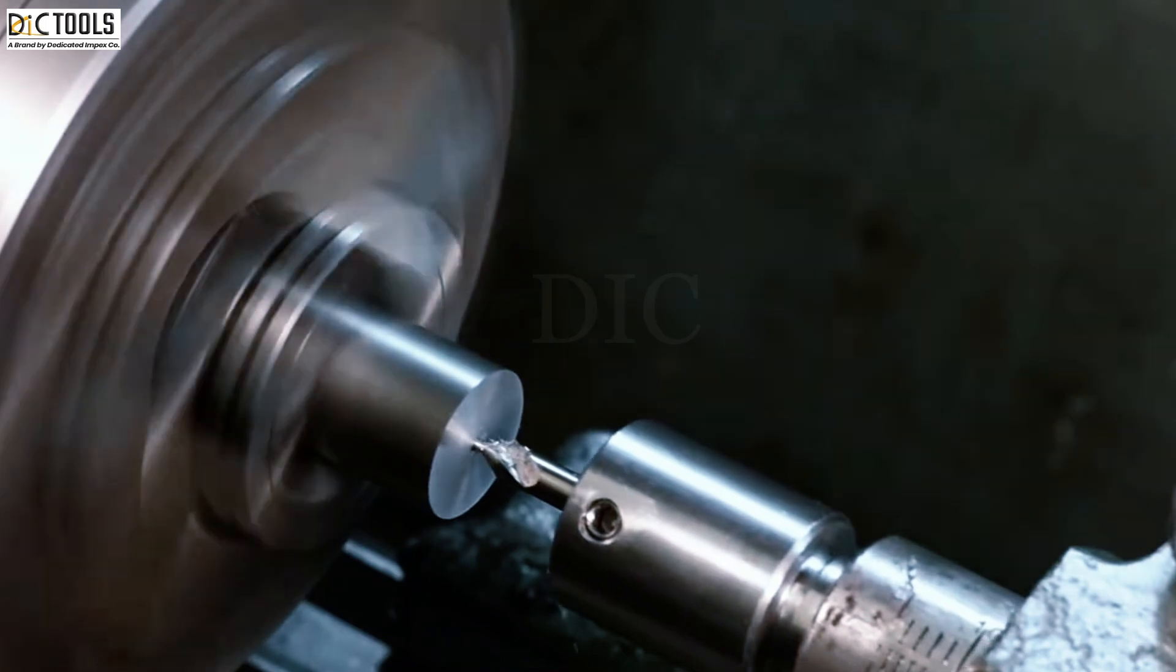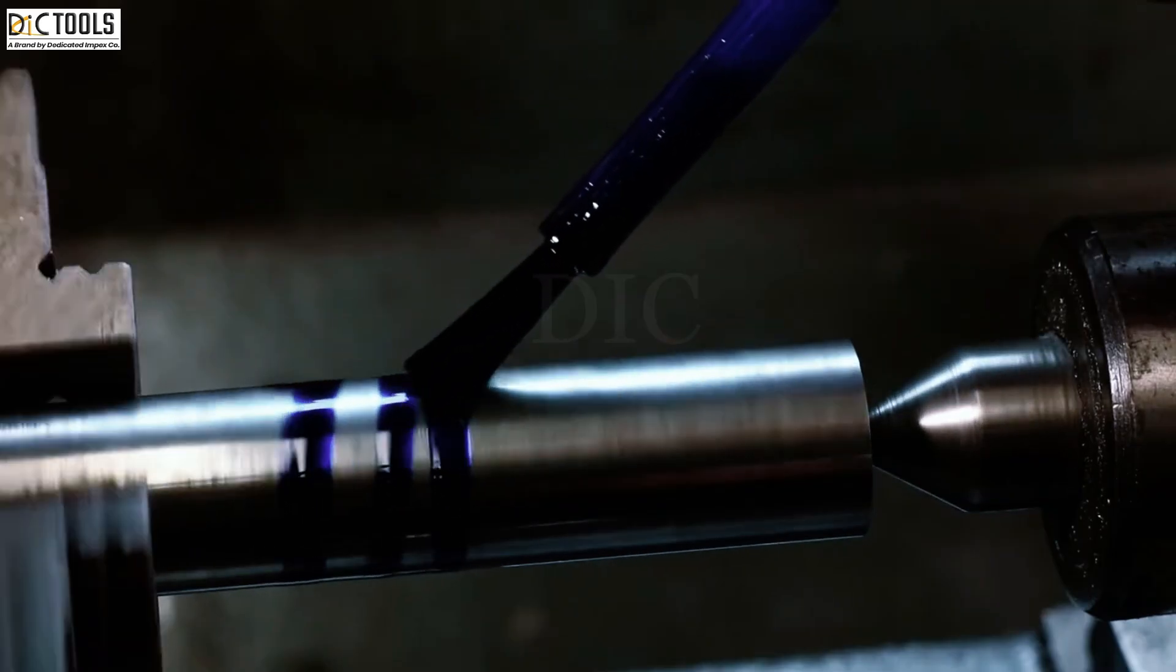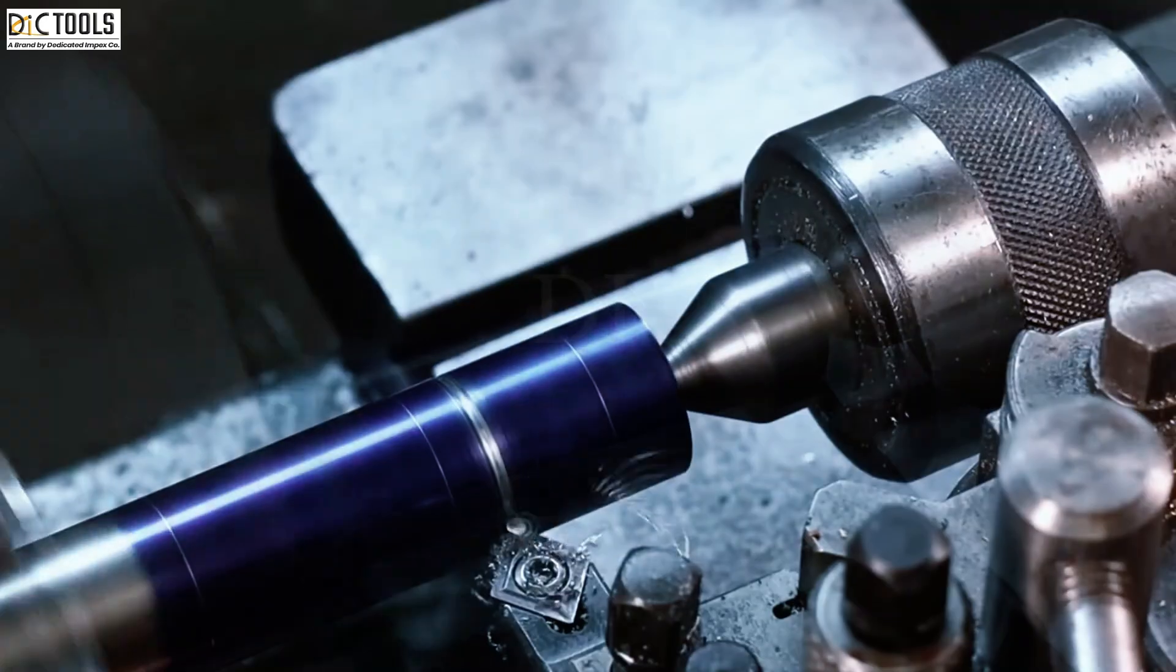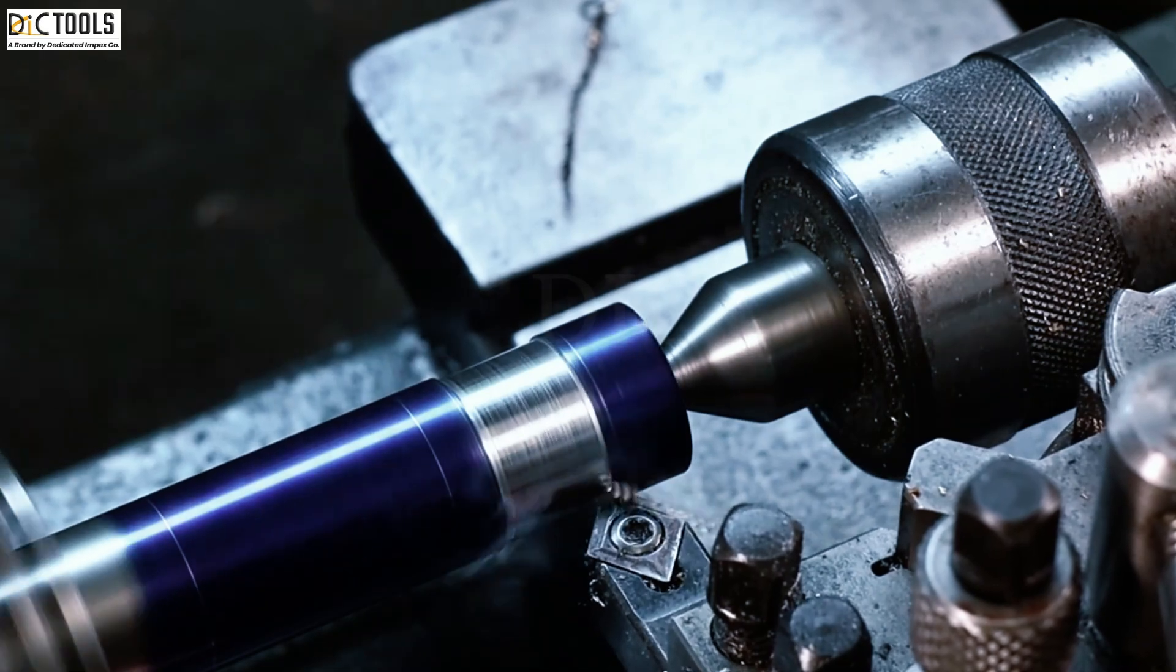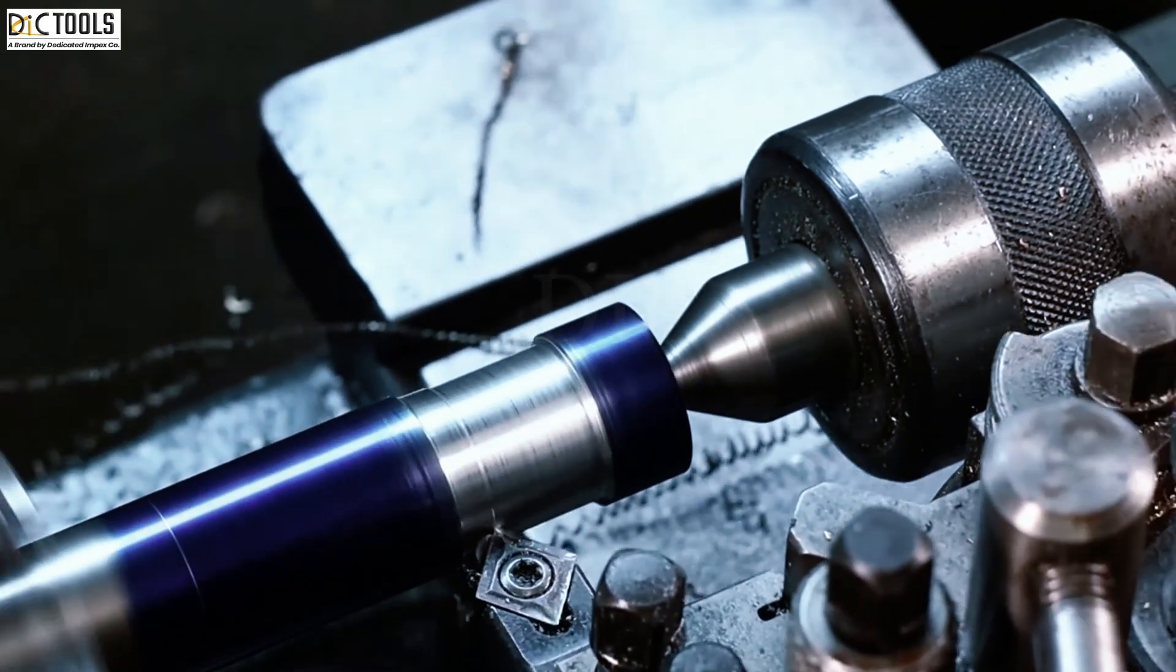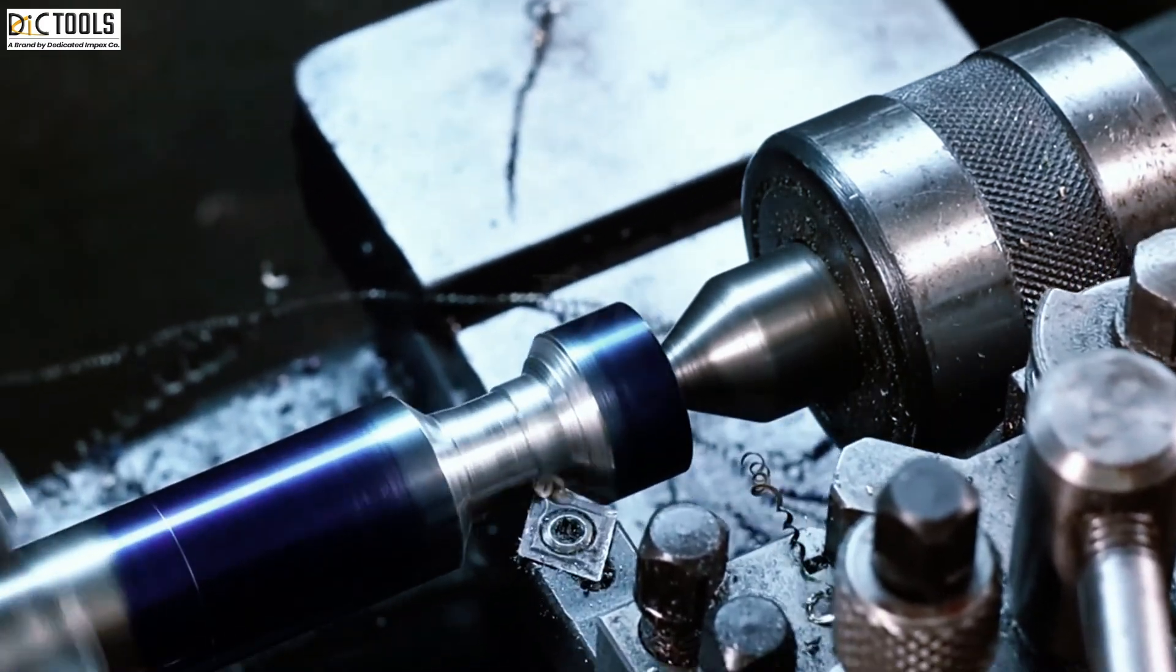The manufacturing of T-slot cutters involves several steps to ensure precision and quality. The process typically begins with selecting high-quality materials such as high-speed steel or carbide, which are known for their durability and sharp cutting edges.